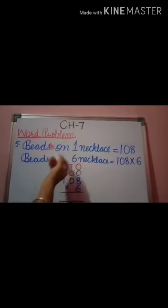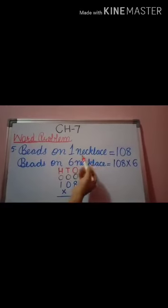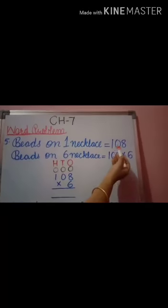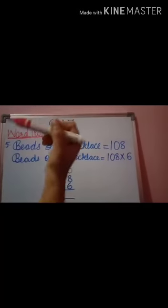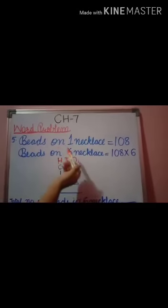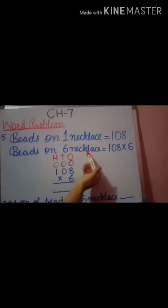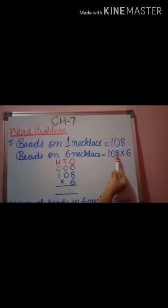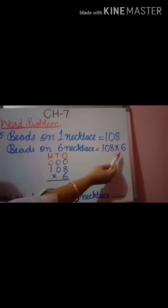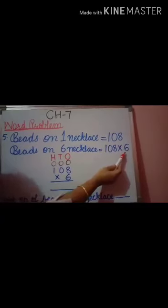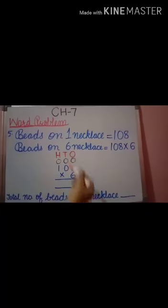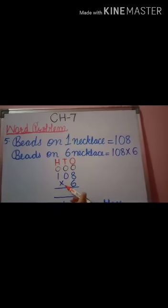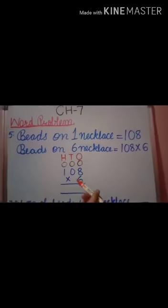Beads on one necklace is equal to 108. Beads on six necklaces is equal to 108 multiply by 6. So 108 multiplied by 6.